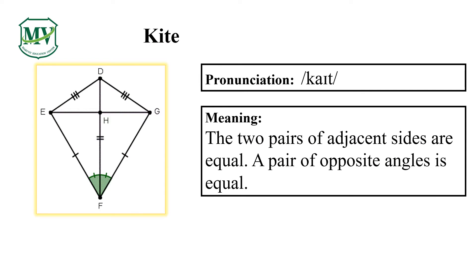Please say the word with me: kite. Can you read the meaning with me? The two pairs of adjacent sides are equal. A pair of opposite angles is equal.